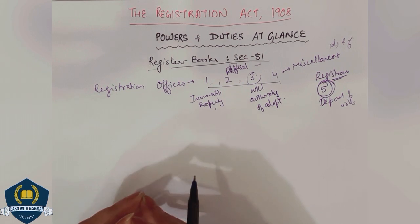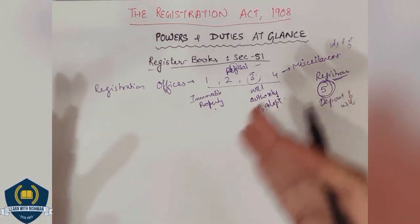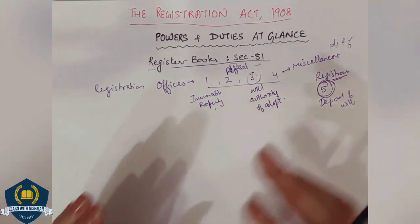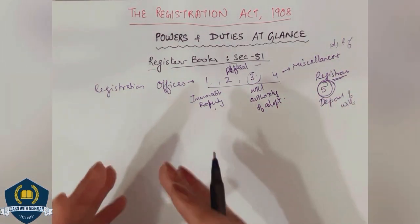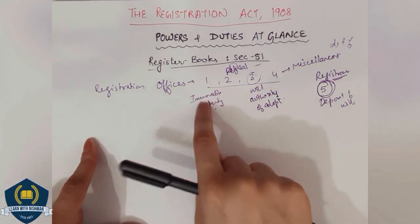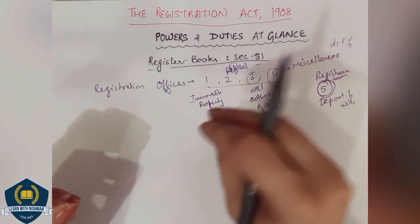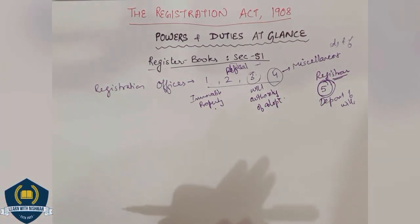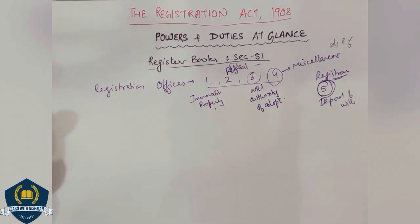There is a very important case: Jagadhar versus Brown. In this case, it was doubtful whether a document was a mortgage or just an agreement to mortgage. The judgment said: if you want to find out whether a document is a mortgage document or an agreement to mortgage, look at which book it is registered in. If it is registered in book number 1, it is a mortgage. If it is in book number 4, it is just an agreement, with no intention to create a mortgage document.